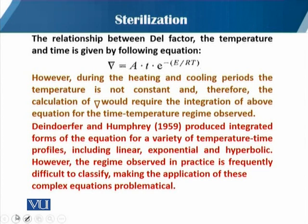As we have seen in our previous modules, the relationship of the temperature can be seen in this equation: the del factor is equal to A, which is the Arrhenius constant, multiplied by T, and then multiplied by e to the power of minus E over RT. This equation shows the relationship of the del factor with the temperature and the time, where T is the time.